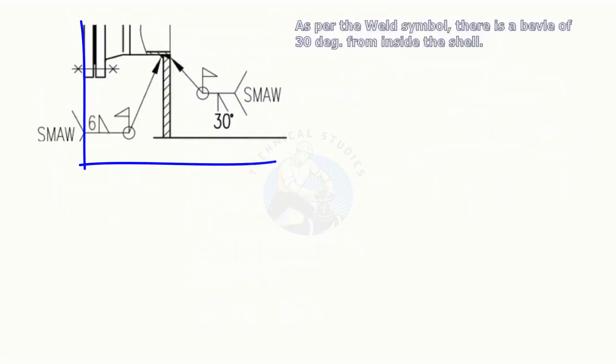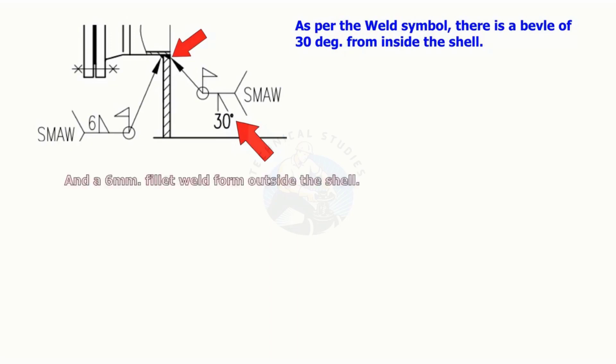As per the weld symbol, there is a bevel of 30 degrees from inside the shell, and a 6 millimeter fillet weld from outside the shell.